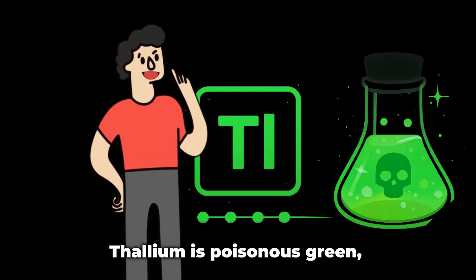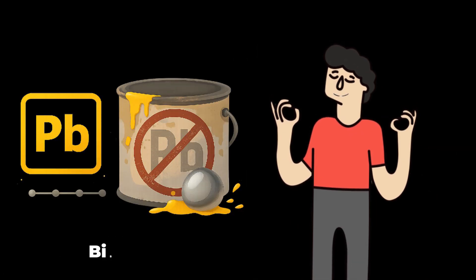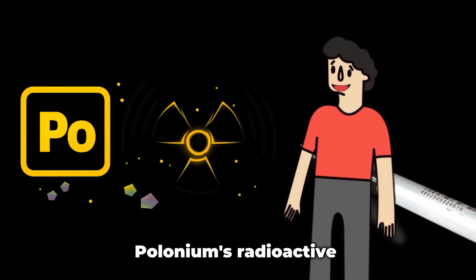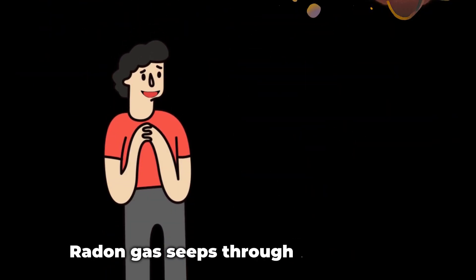Thallium is poisonous green. Lead was banned from paint. Bismuth makes rainbow crystals.